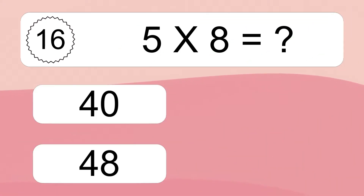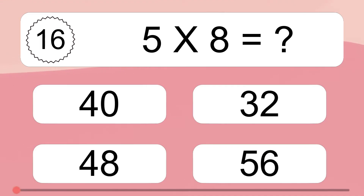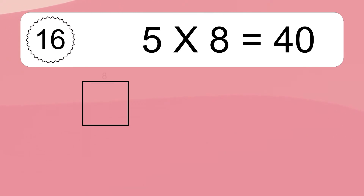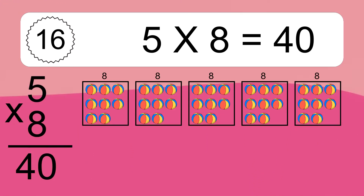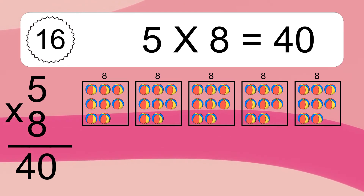Five times eight equals what? Five times eight equals 40. We have five boxes and each box has eight colorful balls inside. If you count all the balls in all the boxes together, you will have five times eight balls. This equals 40 balls.